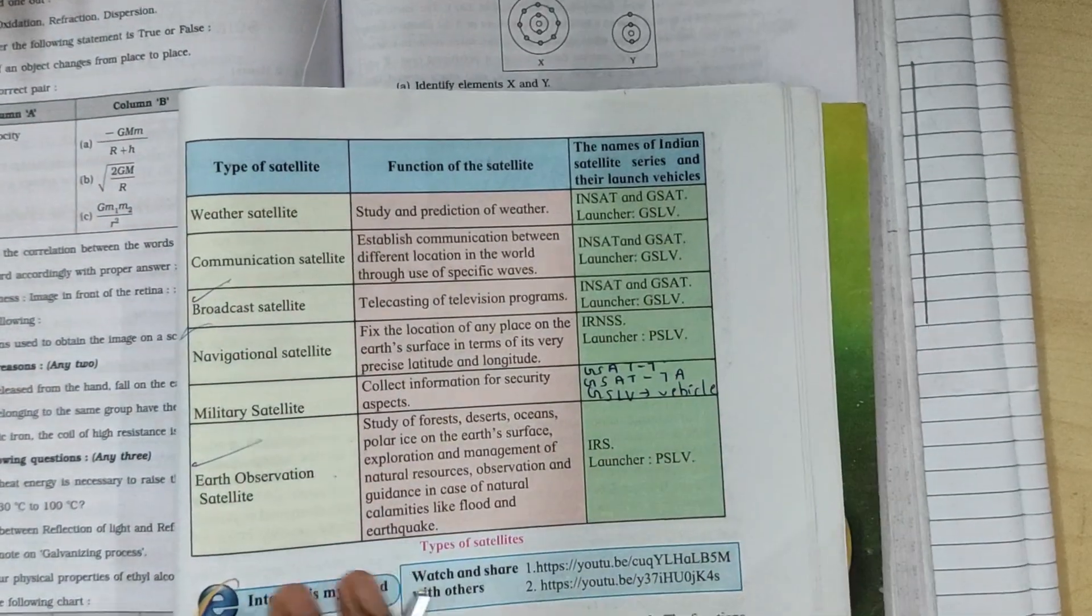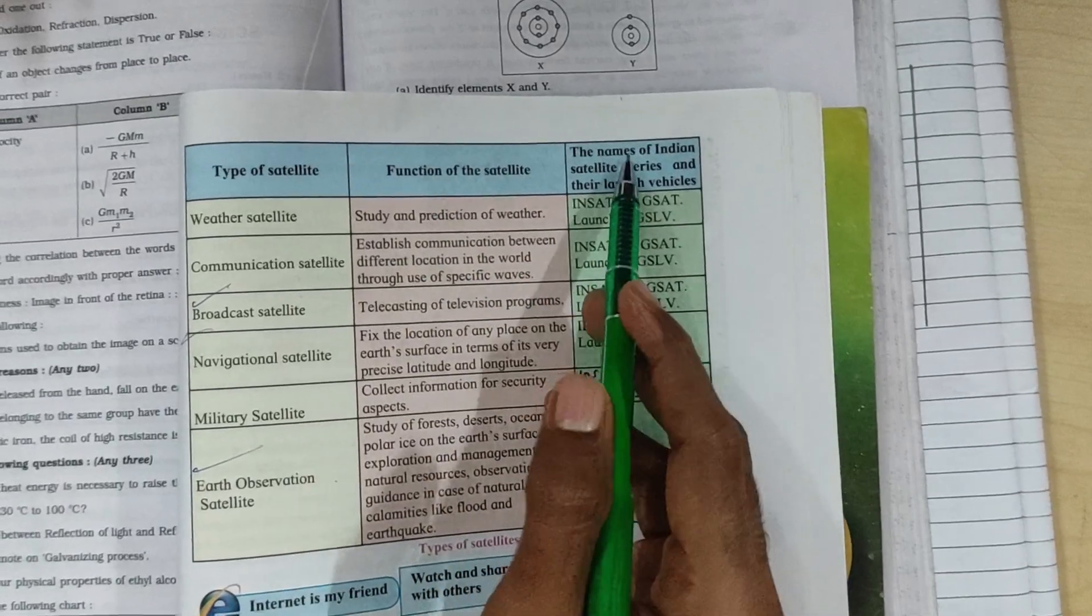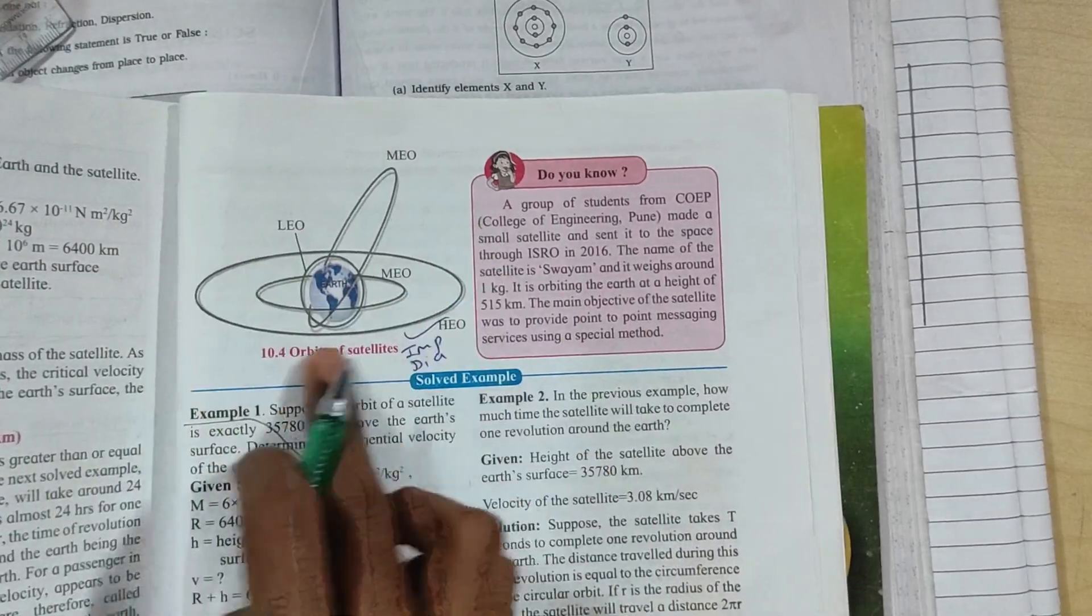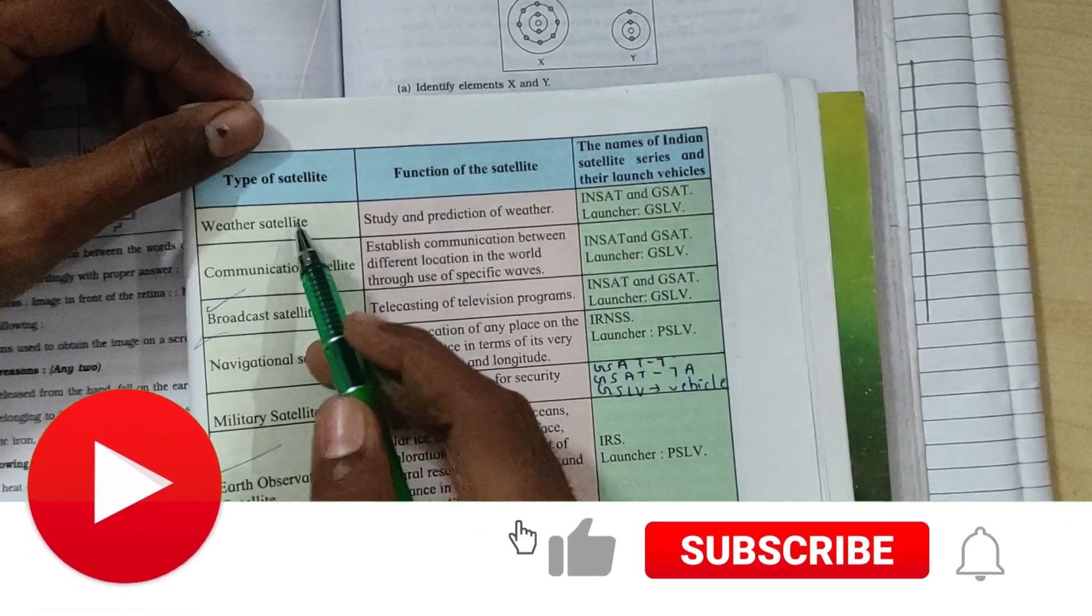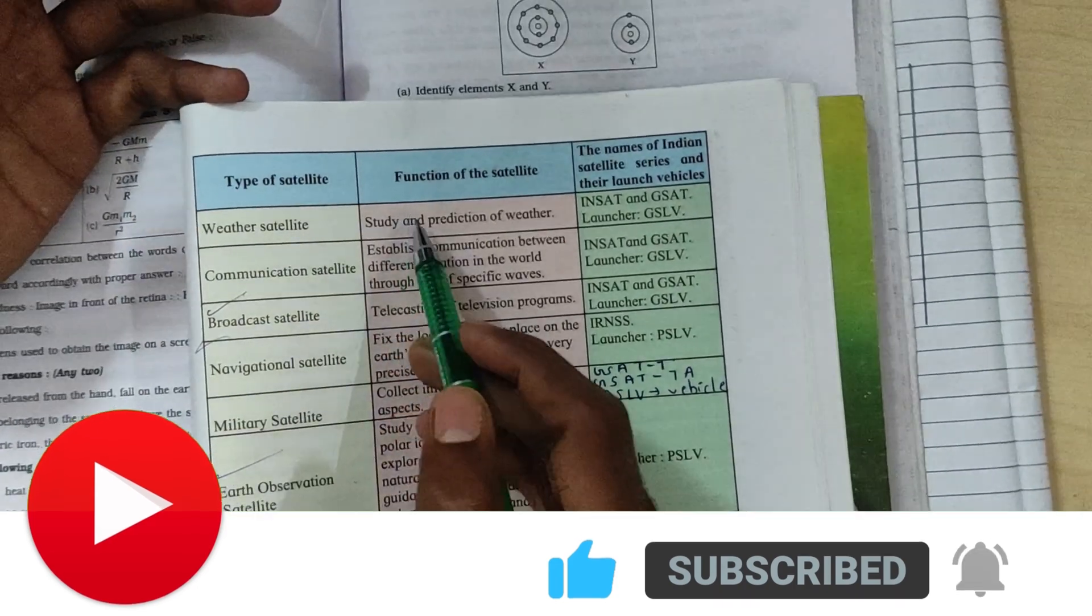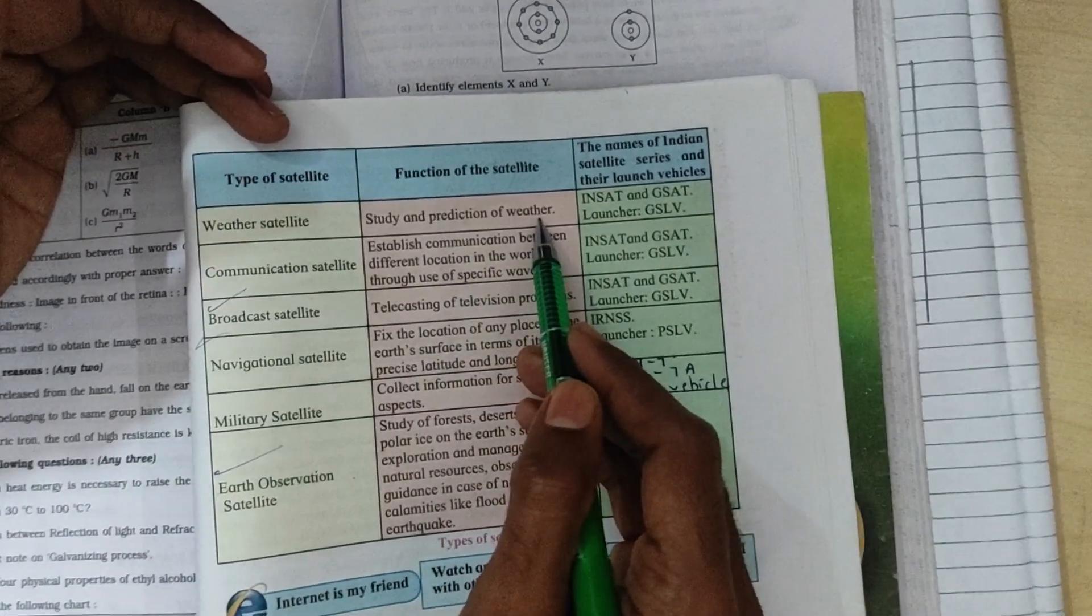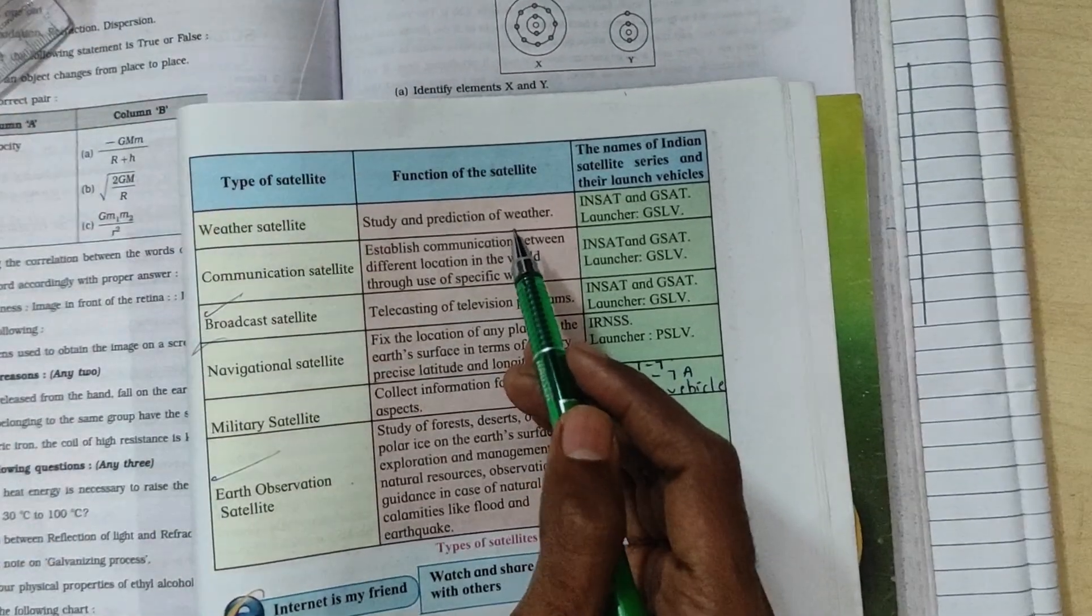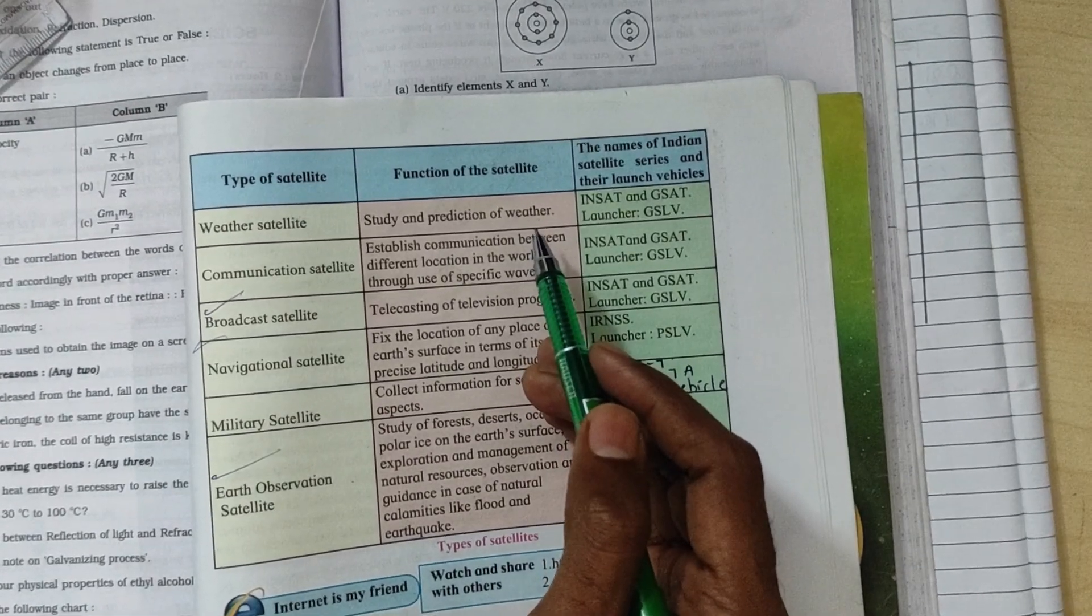Today we are going to learn an important answer: what are the types of satellites and functions of satellites, and the names of Indian satellites. We will also answer about low Earth orbit, medium Earth orbit, and high Earth orbit. Let's see what we have written. Weather satellite works on weather reports - the study and prediction of weather. Suppose you are going to London next month, you will predict what kind of climate it will be, so according to that you will do packing, right?